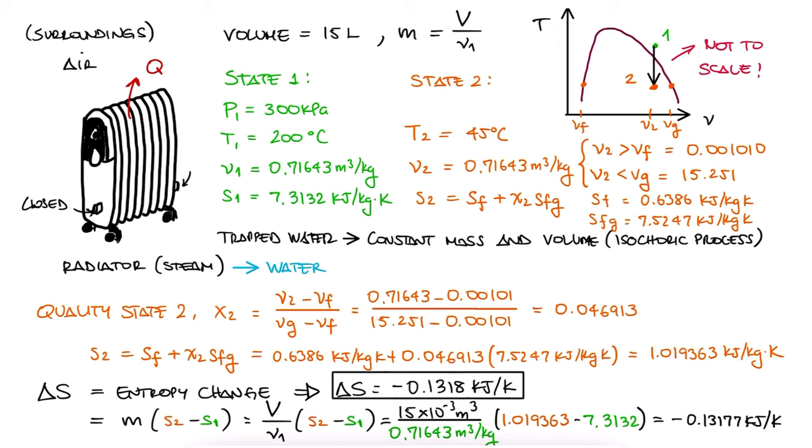This shows what we briefly mentioned in the main lecture. Even though for irreversible real processes there will always be entropy generation, that doesn't mean that the change in entropy cannot be negative. In this case it is negative. It makes sense that if heat is leaving the system, the entropy is decreasing.